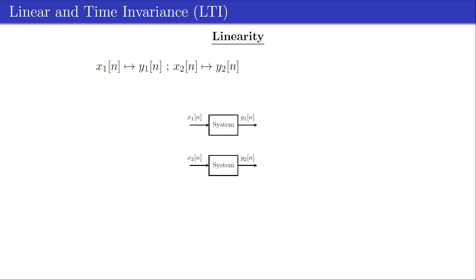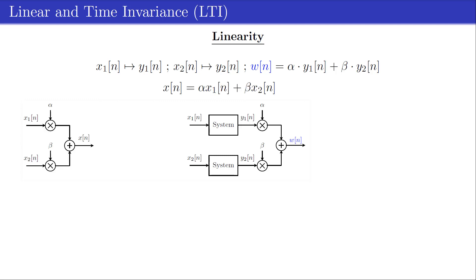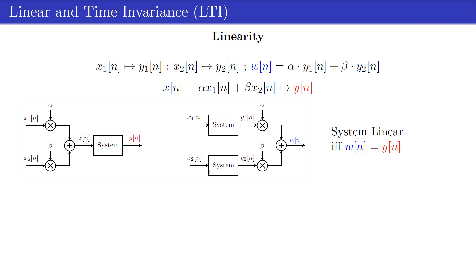Let's take a closer view at both of these properties separately. First, linearity. Assume that an input xn applied to a system results in an output yn. Thus x1n results in y1n and x2n in y2n. On the one hand, we can first apply separately x1n and x2n to the same system, and then combine both outputs into a new output yn = α·y1n + β·y2n. On the other hand, we can first combine both inputs into a new input xn = α·x1n + β·x2n, and then apply this new input to the same system, resulting in output yn. A system is linear if both outputs yn are the same.